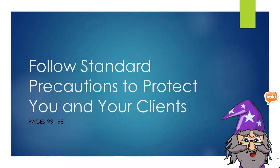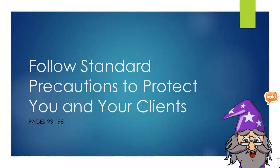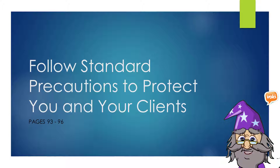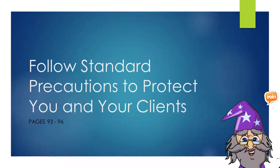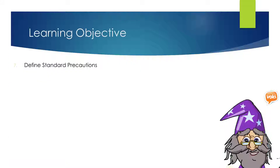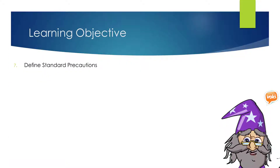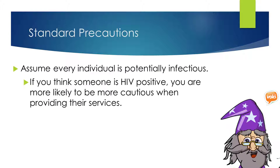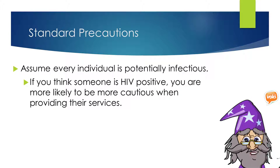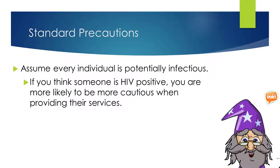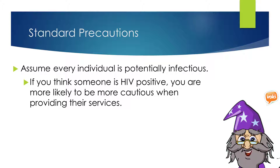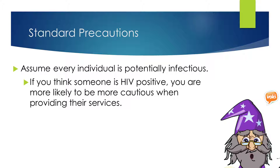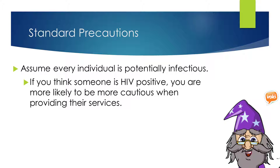To wrap up our chapter, there are a few more things we need to discuss. We need to know how to follow standard precautions to protect ourselves and our clients. Our learning objective for today is to define standard precautions. Standard precautions are guidelines published by the Centers for Disease Control and Prevention that require the employer and the employee to assume that all human blood and body fluids are potentially infectious.